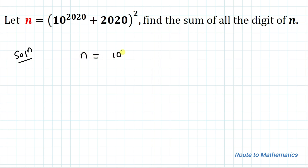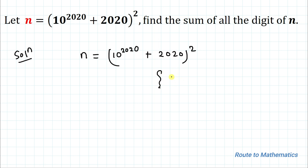We have n equals (10^2020 + 2020)². Let's consider 10^2020 as 'a' and 2020 as 'b'. Now applying the algebraic identity (a + b)² = a² + b² + 2ab.